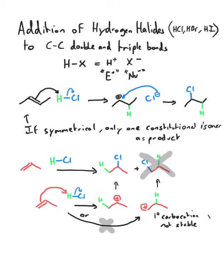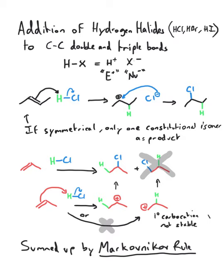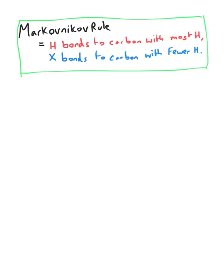This quirk and region selectivity can be summed up by the Markovnikov rule. Markovnikov rule states that the proton will add to the carbon with most hydrogens, and the halide will bond to the carbon with fewer hydrogens.